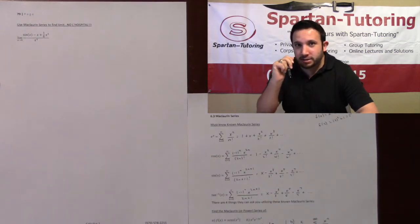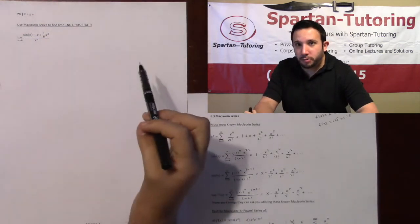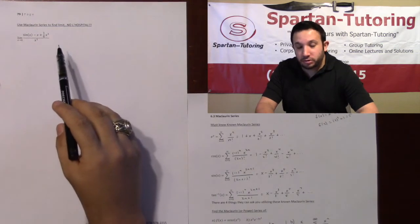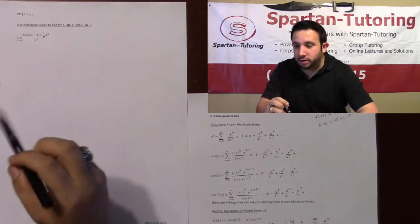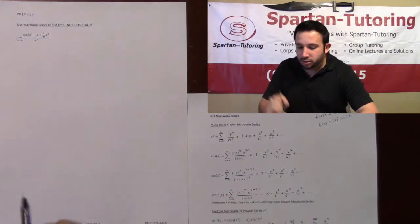One thing to emphasize is you are not allowed to use L'Hopital's Rule. This will probably be a problem on an exam, and if you use L'Hopital's Rule, they're going to give you zero credit. They want to see if you can compute this limit utilizing your known Maclaurin series.